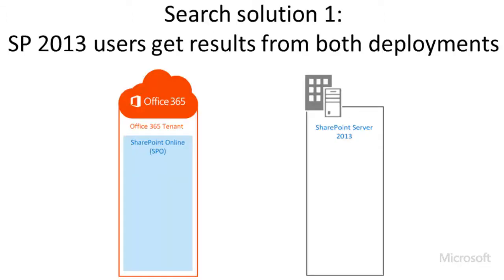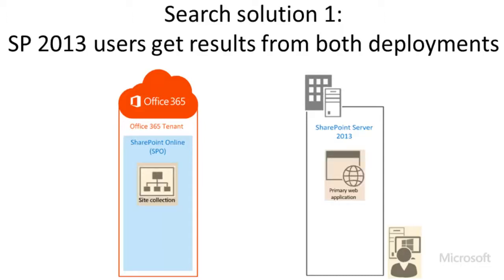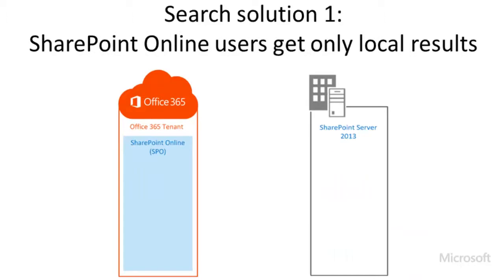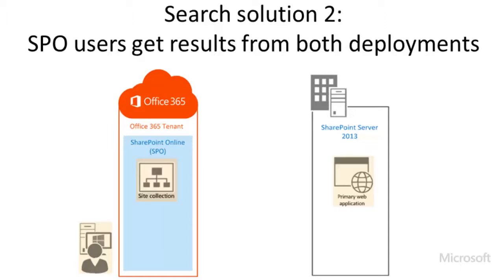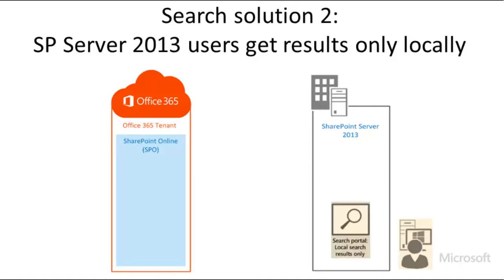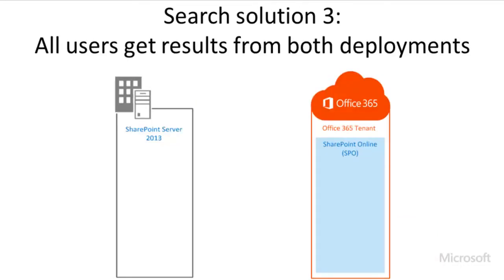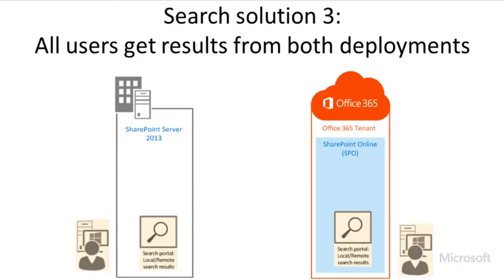In Hybrid SharePoint Search Solution 1, users working in the SharePoint Server 2013 deployment can get search results from content in both deployments and view them on a search results page in SharePoint Server 2013. For Hybrid SharePoint Search Solution 3, we implement both Solution 1 and Solution 2, so that users working in either deployment can get search results from content in both deployments.